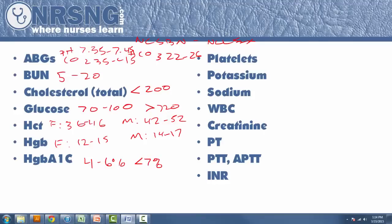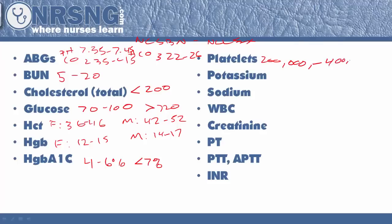For platelets, the normal range is about 200,000 to 400,000 or 450,000. Anything less than 20,000 is really going to be a huge concern — you need to be setting off alarms in your head for your patient. Thrombocytopenia is going to be less than 200,000, with a huge concern at less than 20,000.